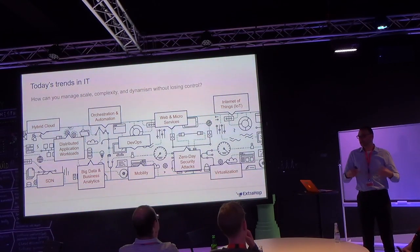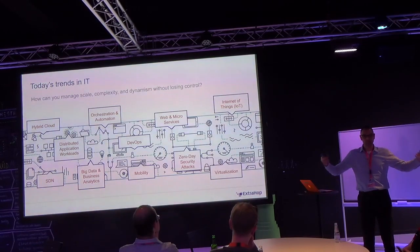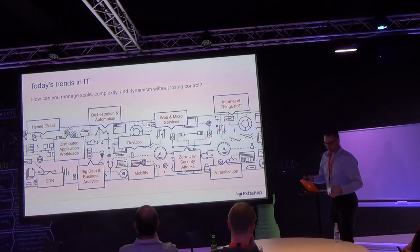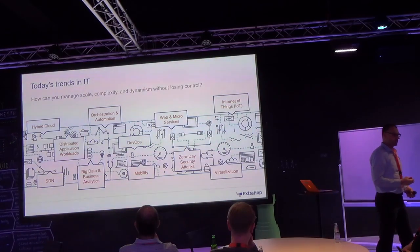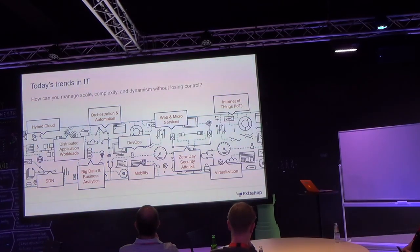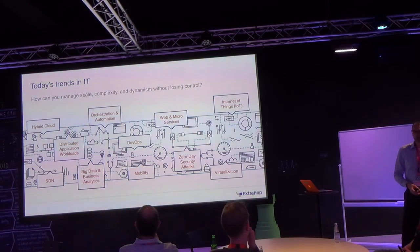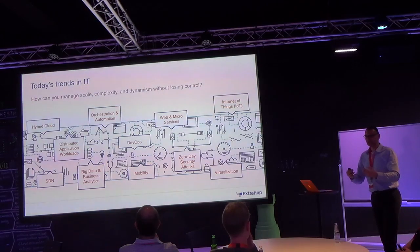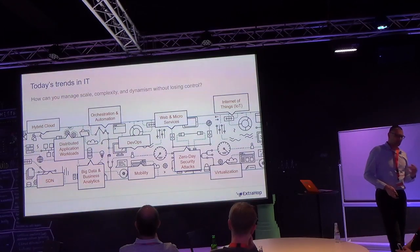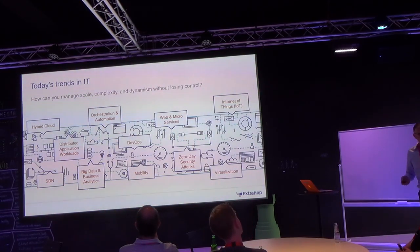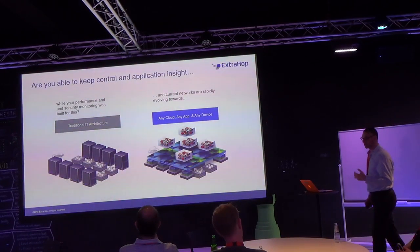Virtualization is happening not only on the server side but also on the networking side. If you want to summarize it in three things: this is causing a lot of complexity. Scale is increasing because we all want to go for more centralized services. And a very important thing — we call it dynamism, you can also call it agility — things change frequently and fast. So how can you keep up and maintain control of what is going on in your environment?